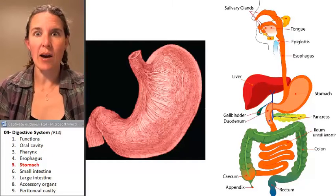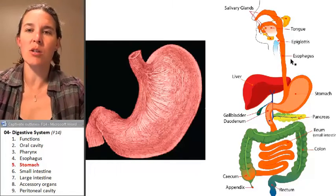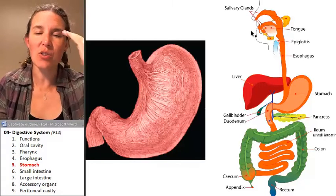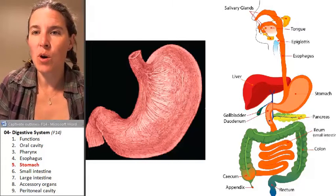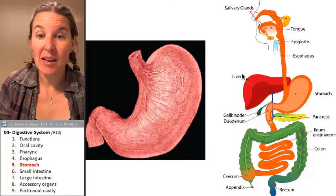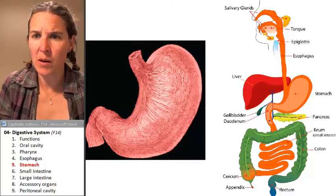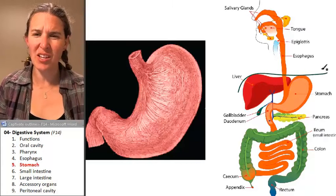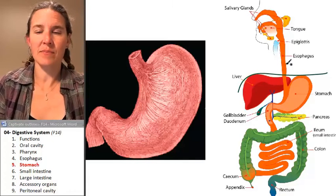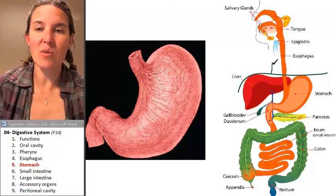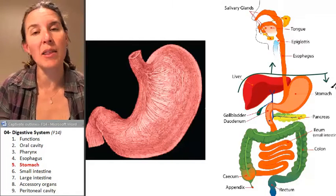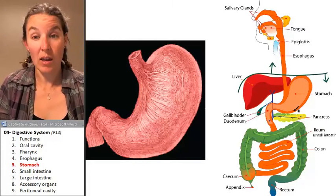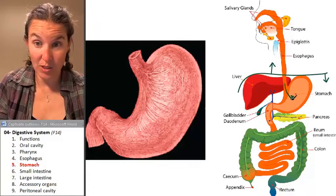Into the stomach we go. I threw on my big picture of your entire digestive tube just so you could remember where you are. This is not to scale, but this is the thoracic cavity and this is the abdominal cavity. So by the time our esophagus travels into the abdominal cavity, we can enter the next space, which is the stomach.